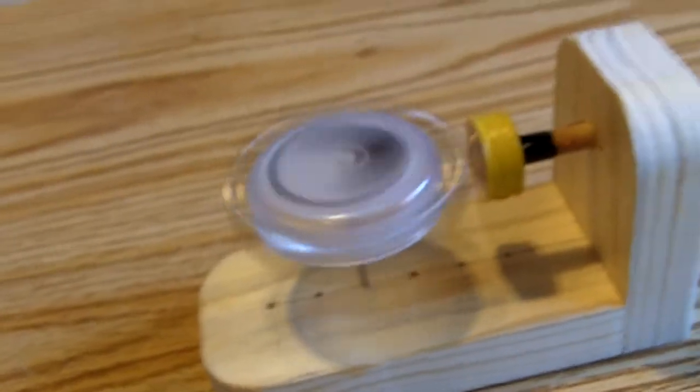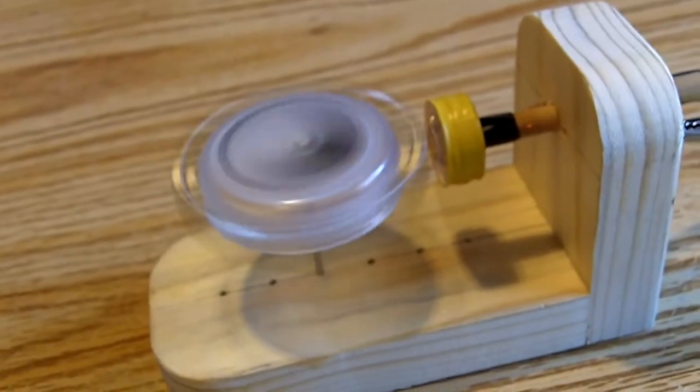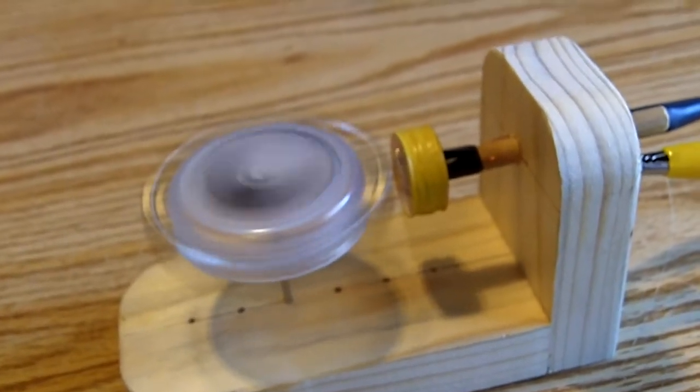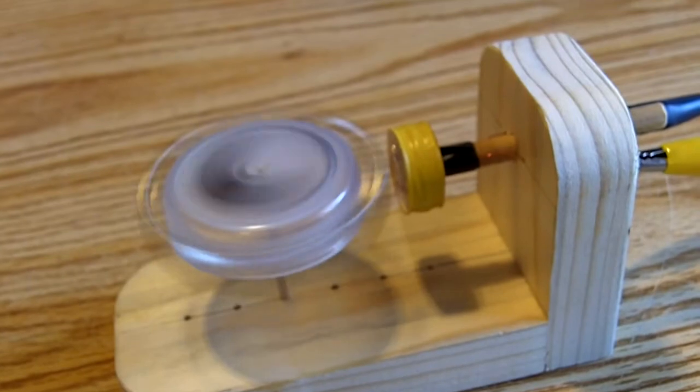The rotor you see spinning there has four small magnets hot glued to it and it's spinning on a large sewing needle.